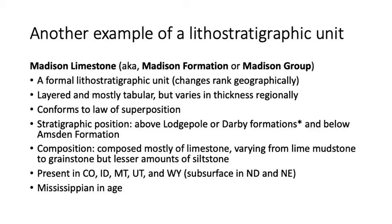There are actually evaporites in places even in the Madison Limestone itself. Its composition is mostly limestone, varying from lime mudstone to grainstone, with lesser amounts of siltstone in places like the Lodgepole. It is present in Colorado, Idaho, Montana, Utah, Wyoming, and in the subsurface in North Dakota and Nebraska. If you hear about the Bakken Shale, the Madison Limestone should be below it wherever you find it.